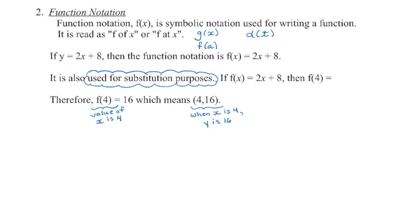We can use function notation to substitute values for x to generate a y coordinate. For example, using f(x) = 2x + 8, let's find the y value when x is 4. We substitute 4 in place of x: f(4) = 2 times 4 plus 8 = 8 plus 8 = 16. So when x is 4, y is 16, giving us the coordinate point (4, 16) that we can plot on our graph.